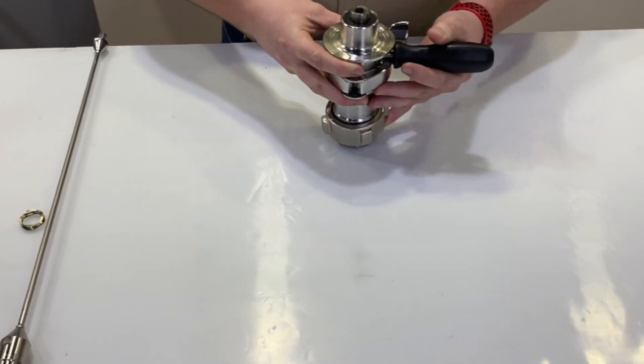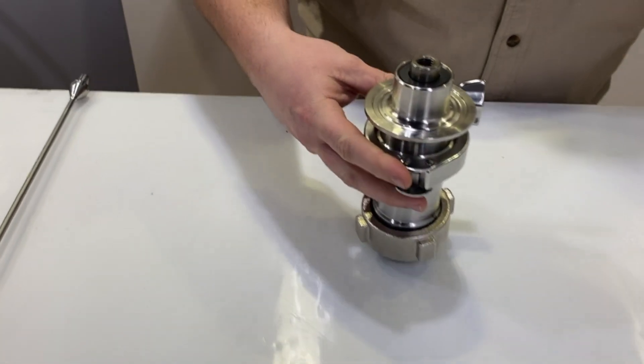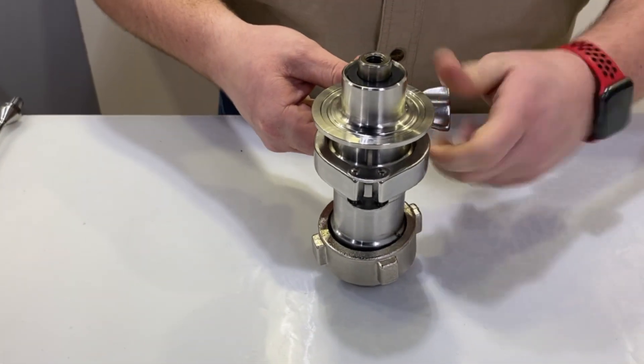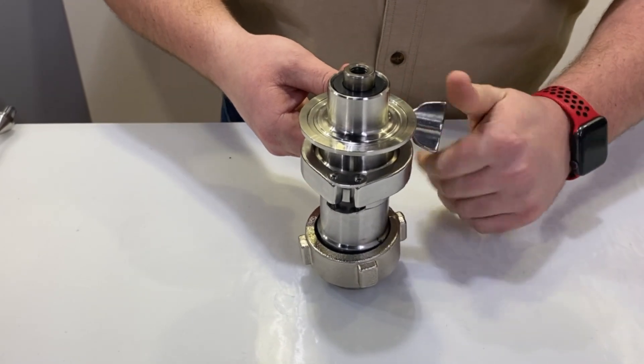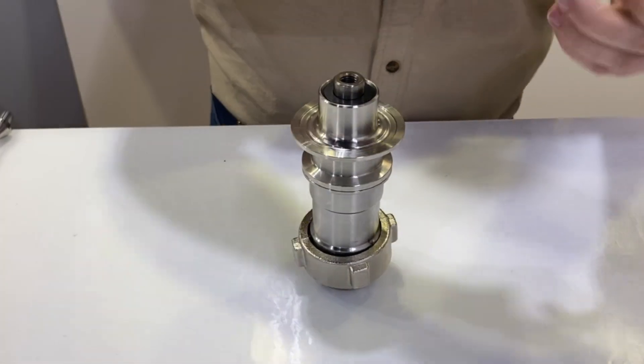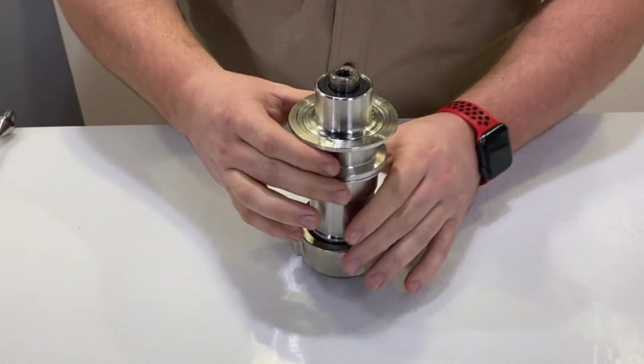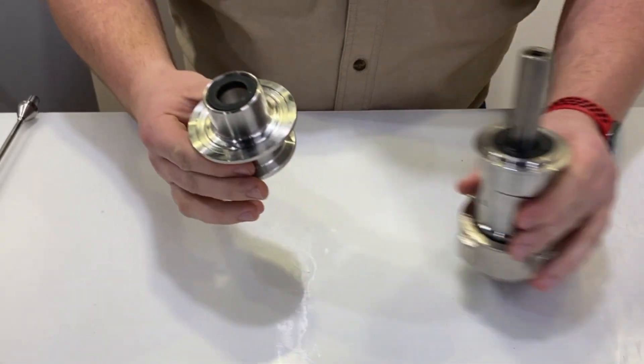We'll now remove the motor connection piece and set your staking tool aside. Remove this last tri-clamp and the motor connection piece will simply slide right off.